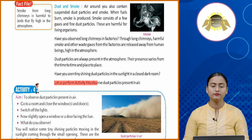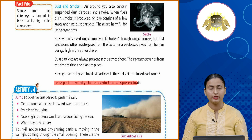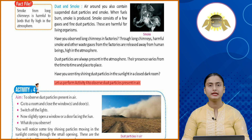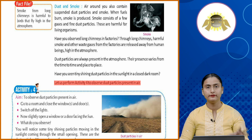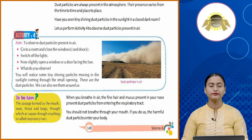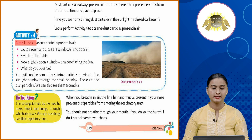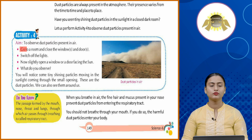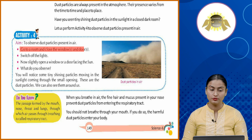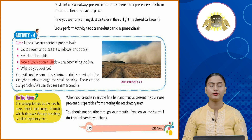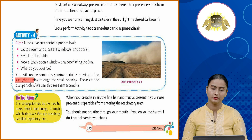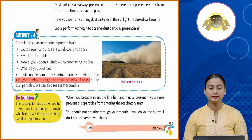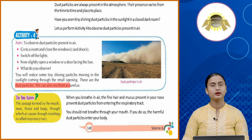Activity 4 — aim: to observe the dust particles present in air. Go to a room and close the windows and doors. Switch off the lights. Now slightly open a window or door facing the sun. You will notice tiny shining particles moving in the sunlight coming through the small opening. These are dust particles. This shows that dust particles are always present in the air.